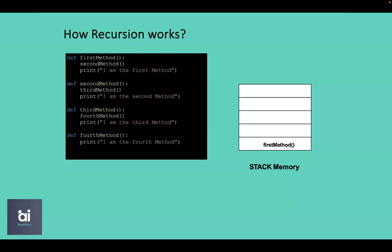Looking at the second method, it also calls another method — the third method. So the system once again needs to store the second method to come back and execute the print statement after the third method. The second method is pushed to the stack as well. This is applicable to the third method too, since it calls another method before executing the rest of its code, so it is pushed to the stack as well.